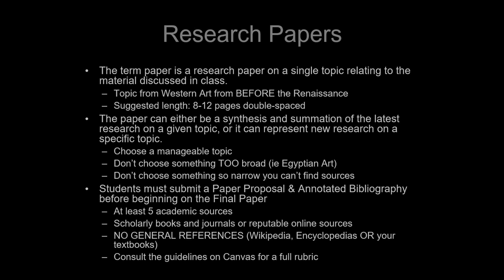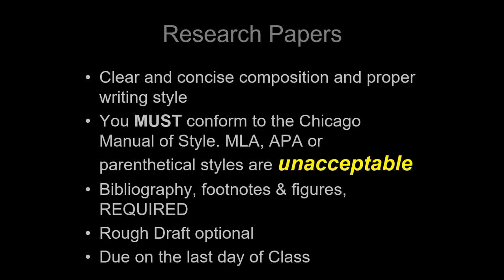I have a complete guideline online that explains exactly what I'm looking for and what I'm grading for both the proposal and the research paper. Research papers must have a clear and concise composition and proper writing style — that means you must conform to the Chicago Manual of Style. MLA, APA, and parenthetical styles are absolutely unacceptable. People get this wrong every year. The Chicago Manual of Style is manageable — you can do it. When you turn in the research paper, you need a final bibliography, footnotes, and figures.